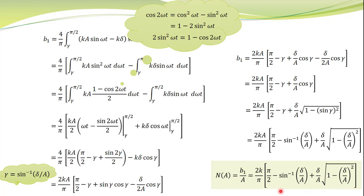There are corrections to be made in the expression: here it should be 2δ/A, and here it should be −δ/A. There are also negative signs missing in a few corresponding terms. Please make these corrections in the expression.